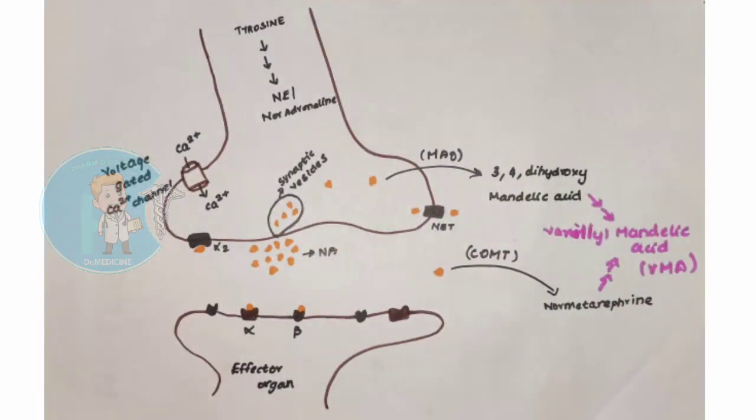In the synthesis of noradrenaline, we store it in synaptic vesicles. Once an action potential reaches the nerve terminals, voltage-gated calcium channels open to allow calcium influx. Once calcium level increases, the vesicles, the synaptic vesicles, and the membrane will fuse. The membrane will fuse and through the exocytosis process, norepinephrine or noradrenaline will be released from the presynaptic vesicles.